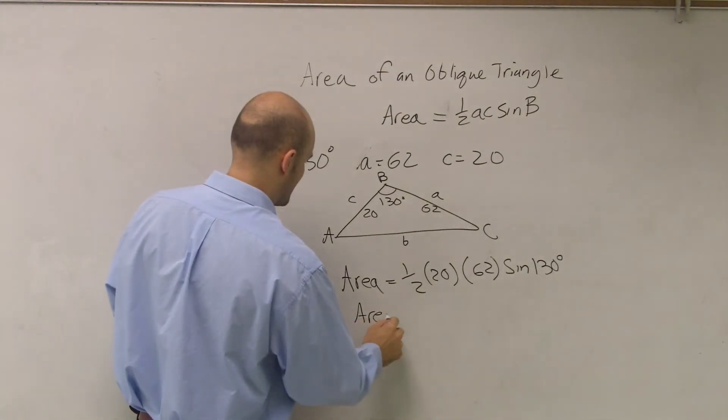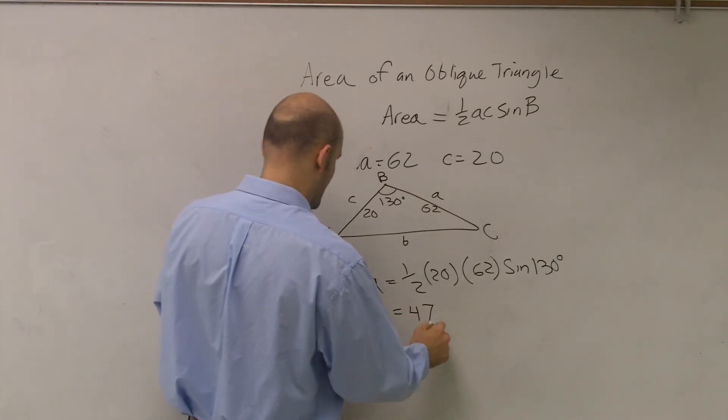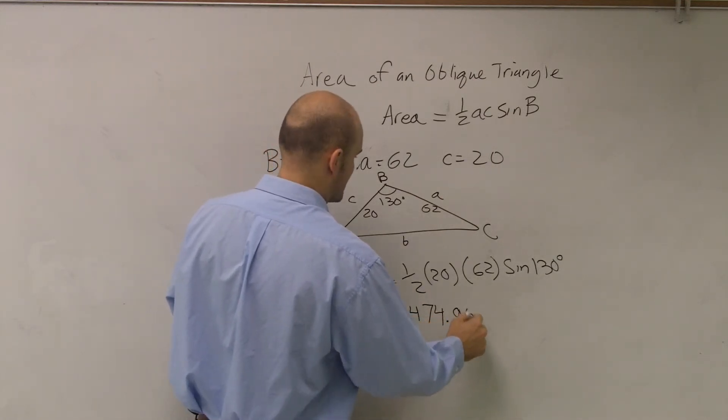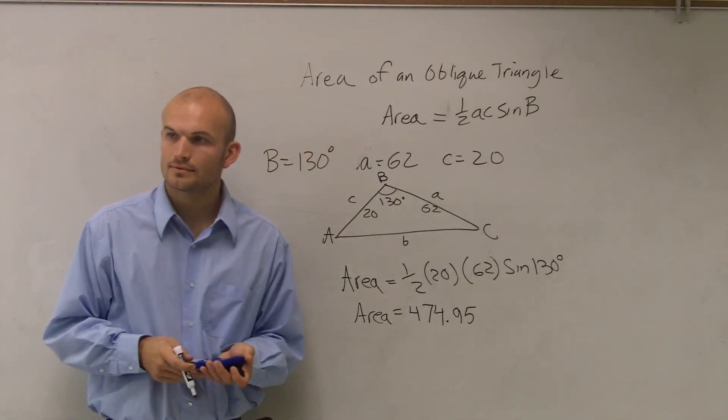Oh, shoot. I don't know what to do. So area equals 474.95. I got 474.95. Okay. 0.95.